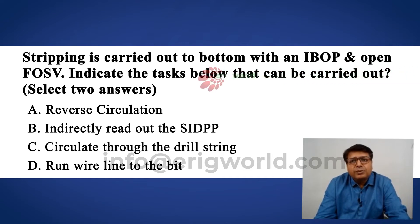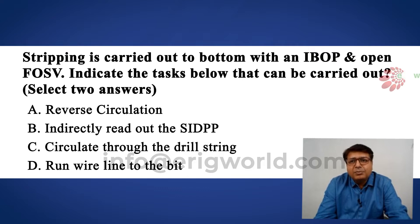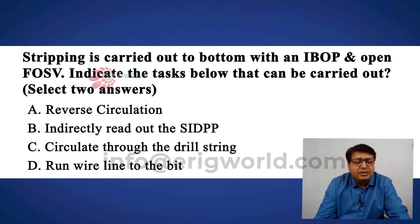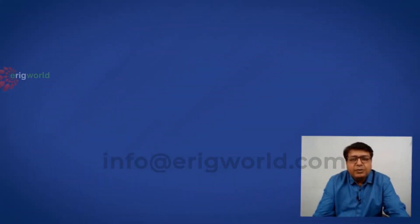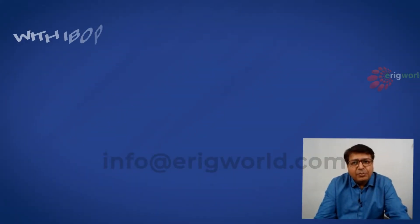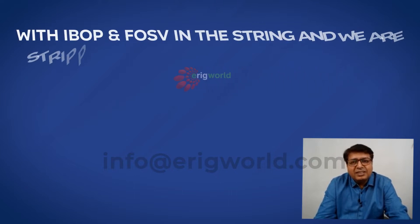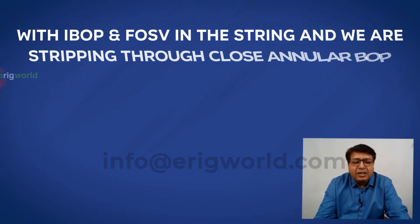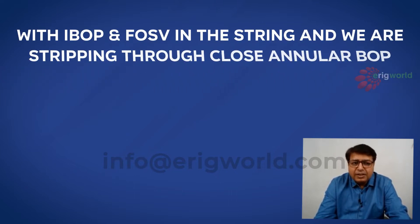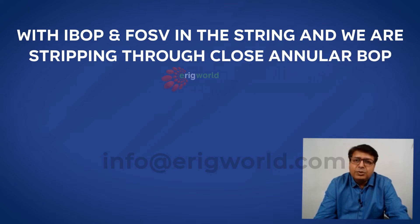Stripping is carried out to bottom with I BOP and open FOSV. This indicates the tasks that can be carried out. With I BOP and FOSV in the string, we are stripping through the BOP. Close BOP, close annular BOP.